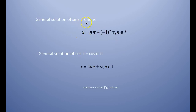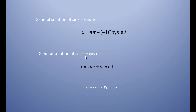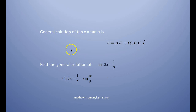The general solution of sin x = sin α is x = nπ + (−1)ⁿ α. This is obtained by taking sin x − sin α = 0 and applying the expansion of sin A − sin B. Similarly, the general solution of cos x = cos α is x = 2nπ ± α. The general solution of tan x = tan α is x = nπ + α, where n is an integer.